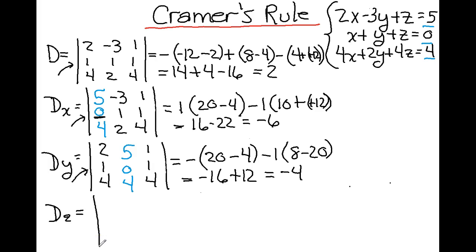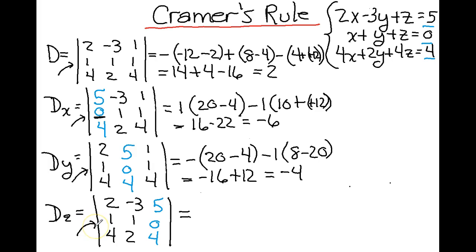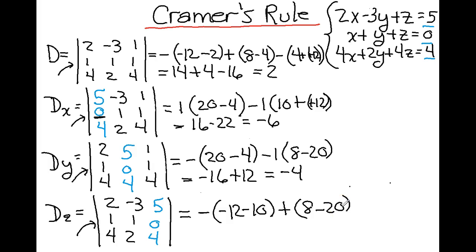Lastly, we're going to calculate D sub z. We keep our x coefficients and y coefficients and write the numerical values of our equations for this determinant. The middle row looks easiest again. We subtract our first minor: negative 12 minus 10. We add our second minor: 8 minus 20. Our third minor is multiplied by 0, so we skip that. This gives negative 22 times negative 1 is positive 22, minus 12, to get 10.